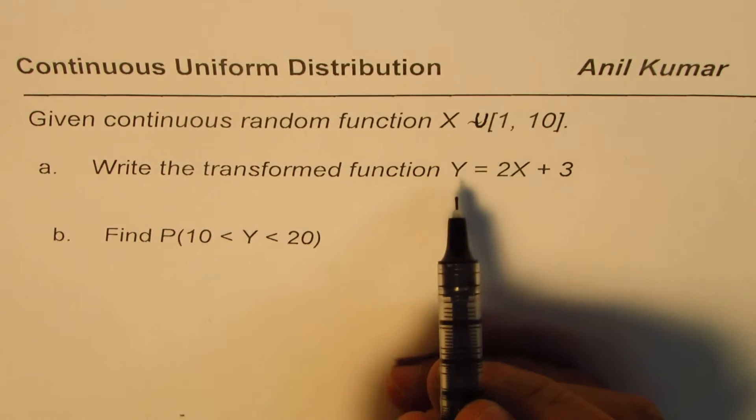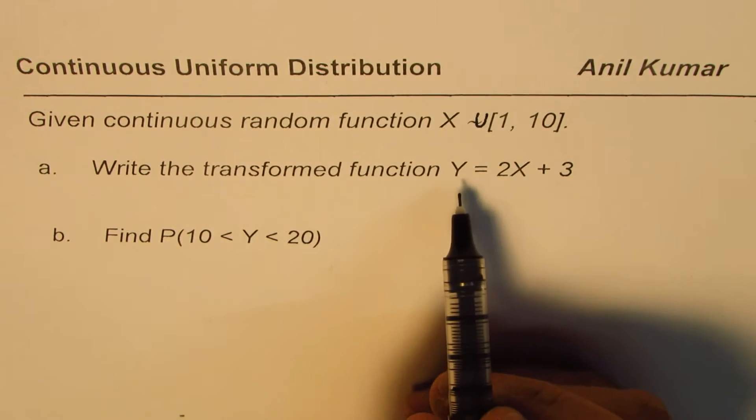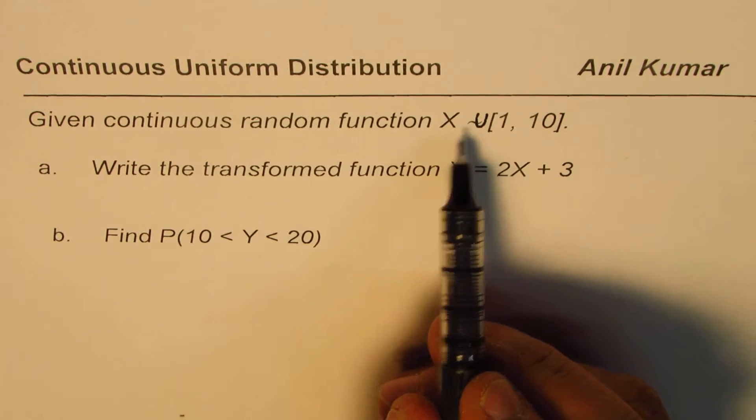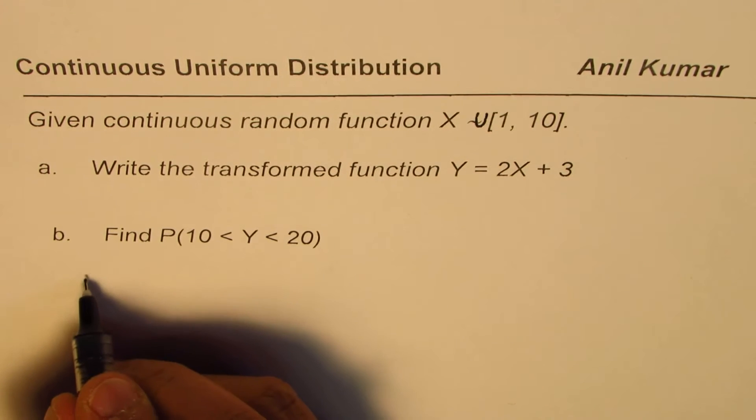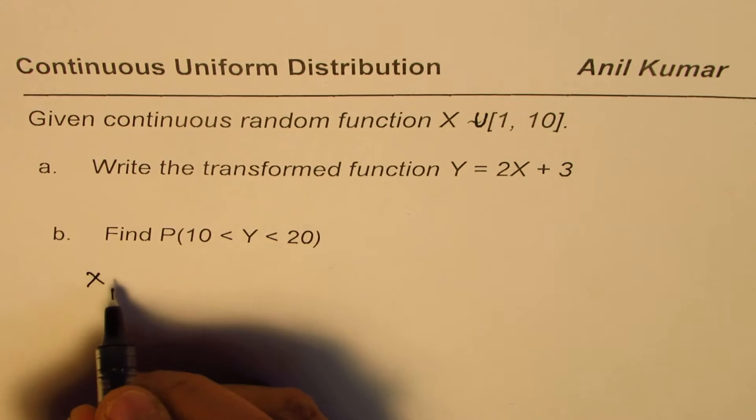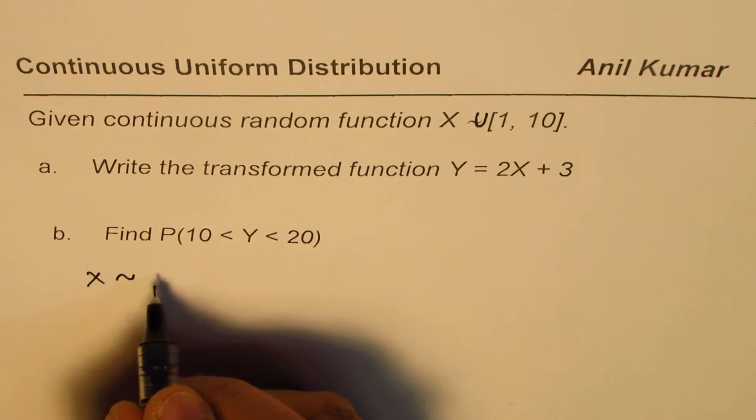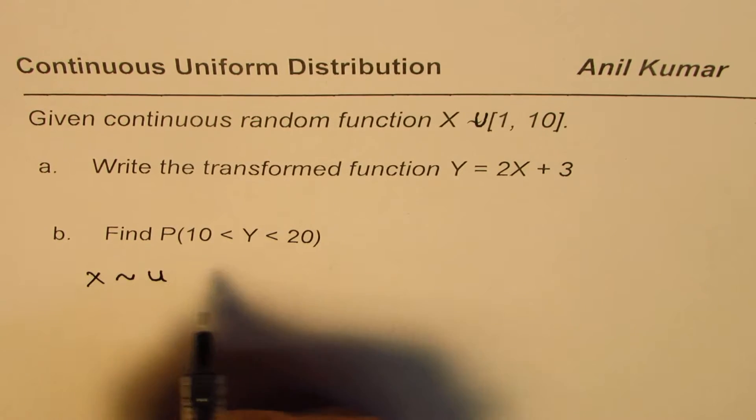So let's try to see how to define Y in terms of a continuous random function given to us. What we are given here is that X is a continuous uniform distribution, so U stands for uniform.